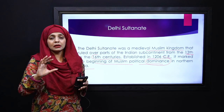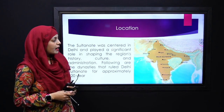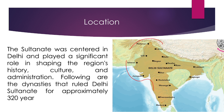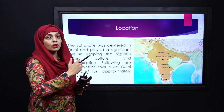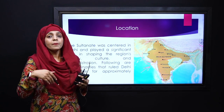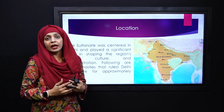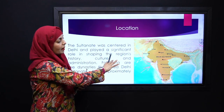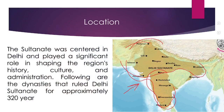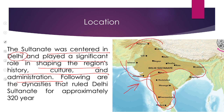Delhi Sultanate ka ismein ek bada ahem kirdar hai, kyunke aap dekh saktay hain ke yeh terwini sadi se leke solwini sadi tak inka raaj qaaim raha, aur ismein multiple dynasties thi. Yeh woh poora ilaqa hai joh ke Delhi Sultanate ke alaqe mein aata hai — maximum north poora inkei haat mein tha, further towards the south yeh area bhi inkei rule ke andar aata tha, but under different rulers, muktelif rulers ke dor mein. The Sultanate was centered in Delhi.